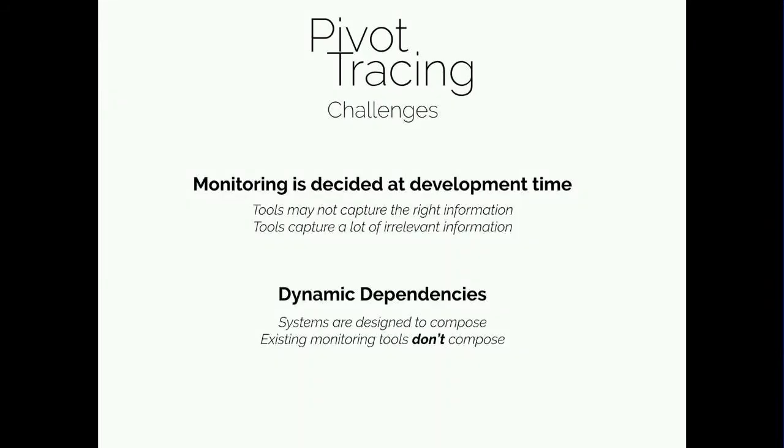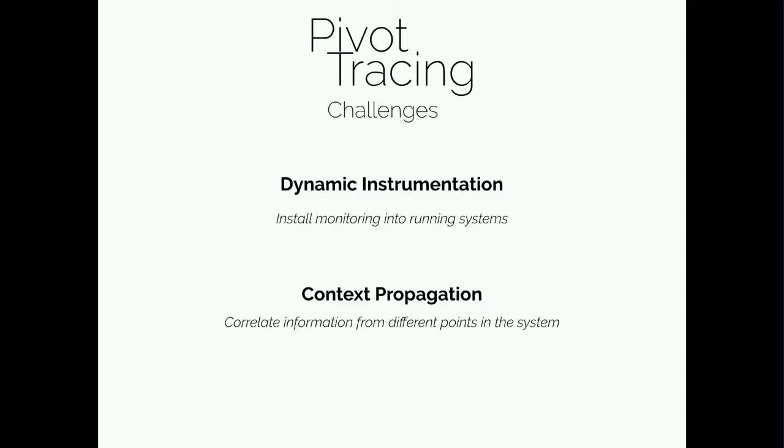There are two important challenges that Pivot Tracing addresses. First, distributed systems typically incorporate monitoring at development time — developers decide a priori what they want to log and monitor. So when we later encounter a problem, the tools in place often lack the information needed to actually diagnose it. And to make matters worse, although distributed systems are inherently designed to compose, the monitoring tools in place today do not compose.